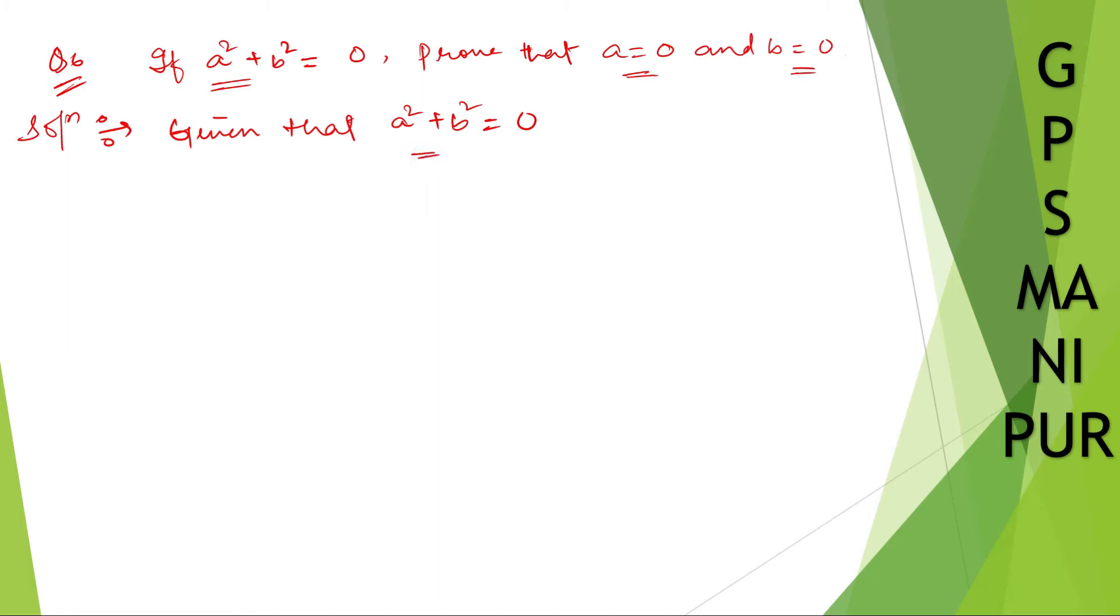So, a² + b² = 0. Therefore a² = -b², since b² goes to the other side and becomes minus b².